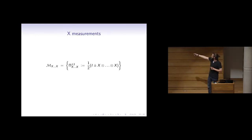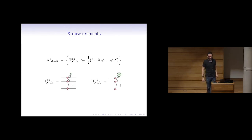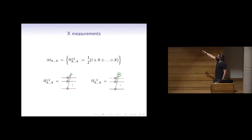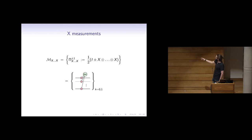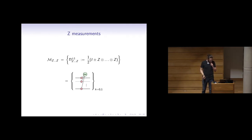I can picture these kinds of measurements in ZX. The two projections associated with an X-string measurement: the plus-one projection is a green dot connected to a bunch of red dots, and the minus-one projection is a green pi dot connected to a bunch of red dots. I can wrap those two cases into one: a k-pi dot connected to all these red dots, where k is zero for outcome zero and one for outcome one. Similarly for Z measurements — the colors flip.